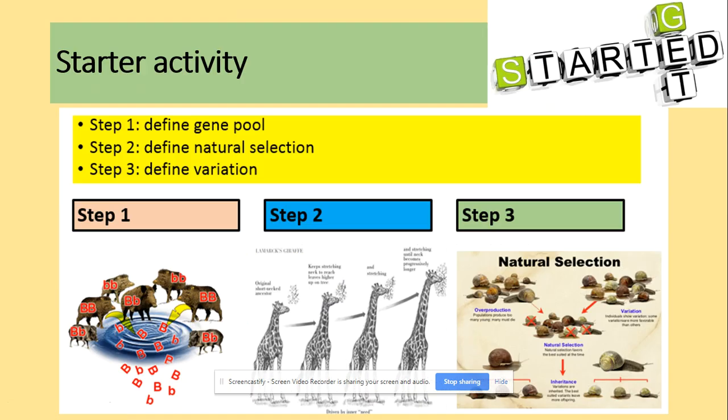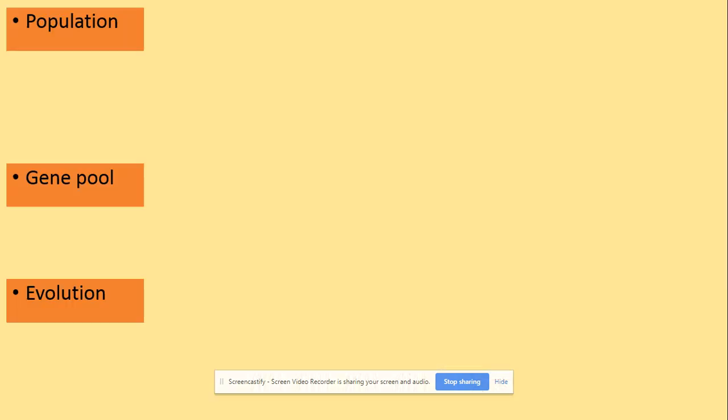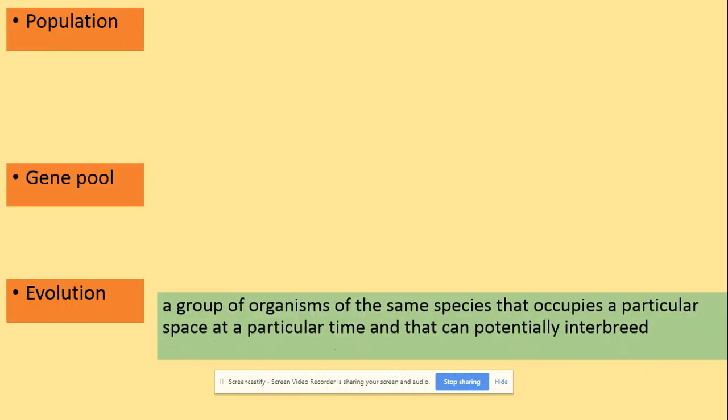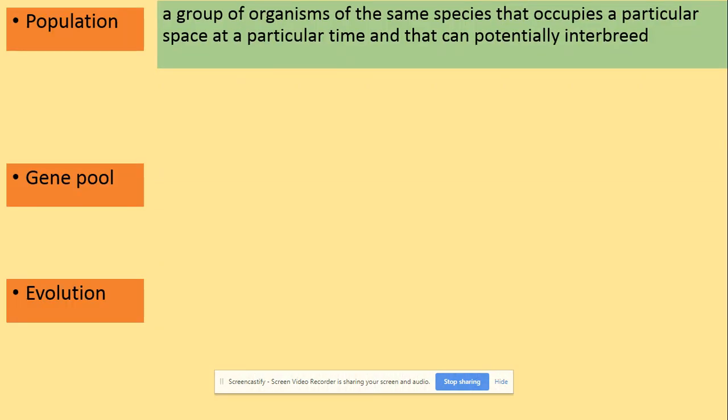There are a few definitions that you need to be aware of before we start looking at selection. So one of those is the population — it's a group of organisms of the same species that occupies a specific space at a specific time and can interbreed and produce fertile offspring.